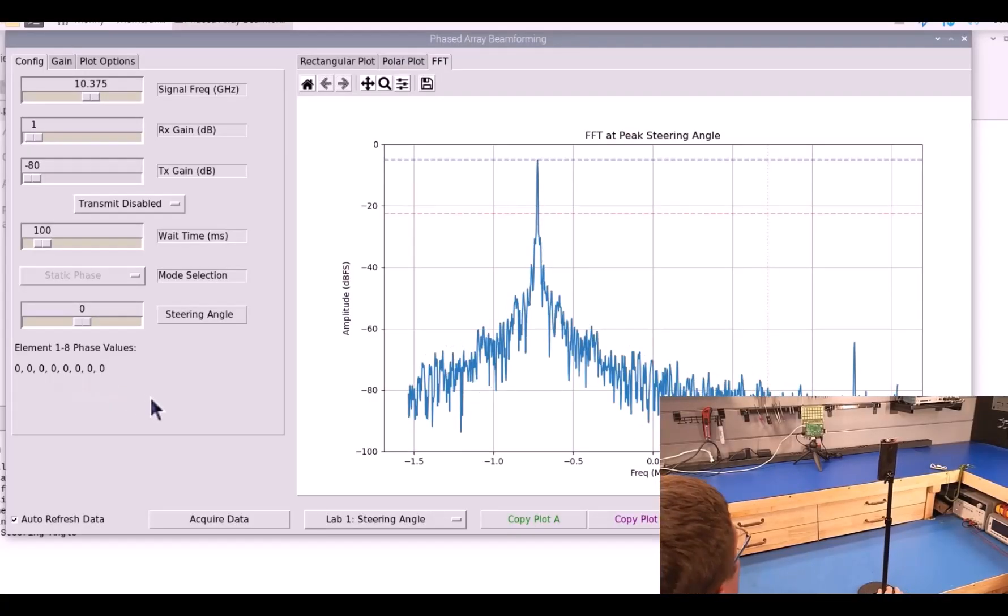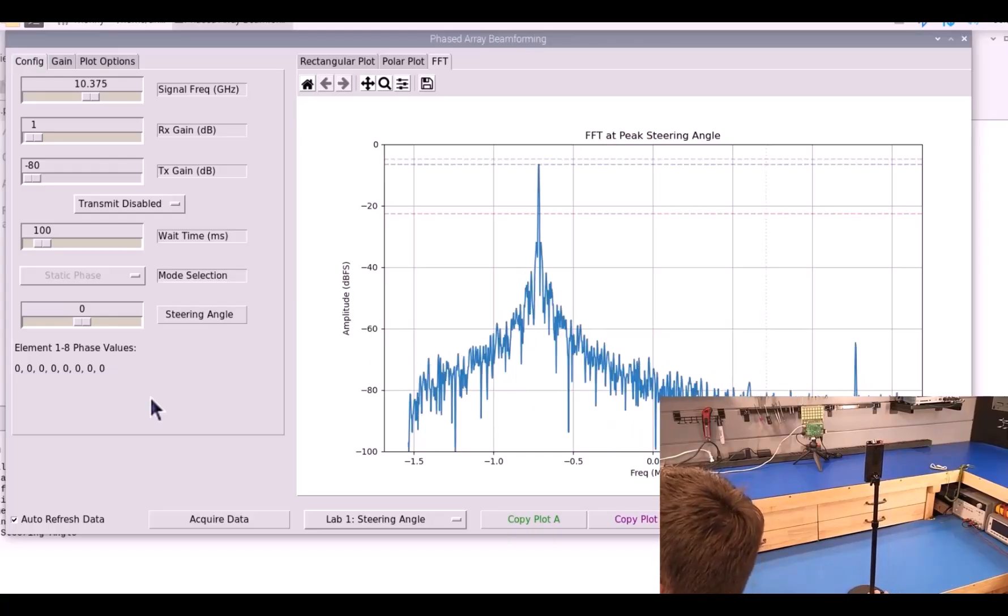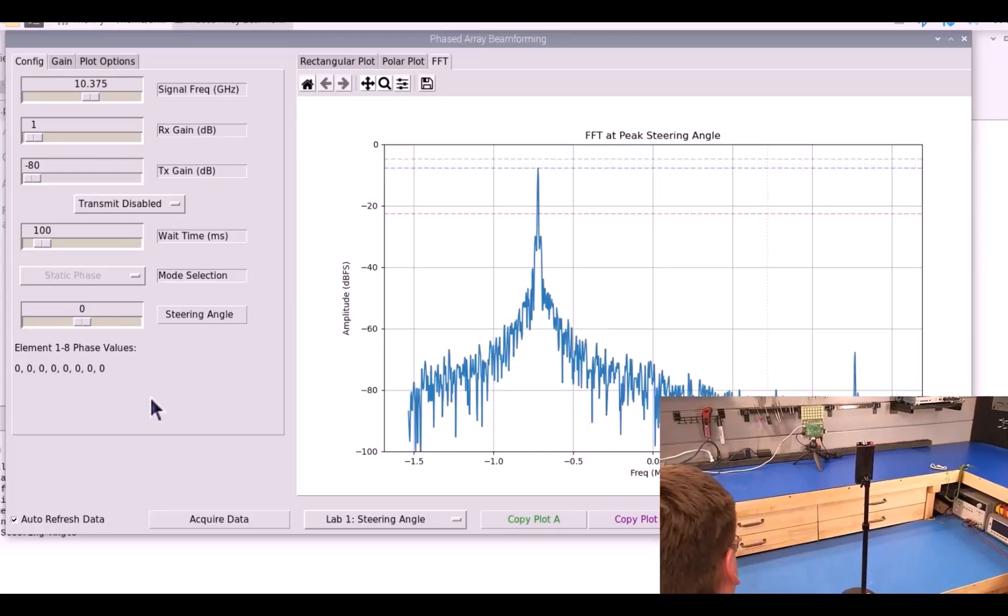In the last video, we looked at how to electronically steer these antennas using a phase shift applied to each of the antenna elements in the array. And we saw a good correlation between the value that the equation gave and the value that we measured with real hardware. So we saw the highest amplitude of the signal when we set our phase shifts to what the equation predicted.